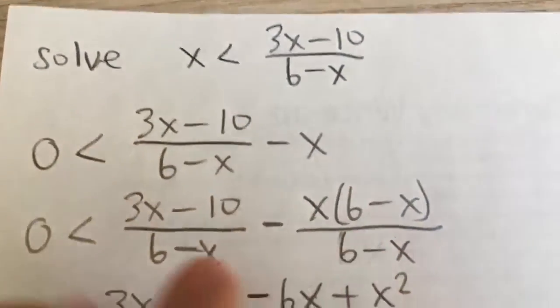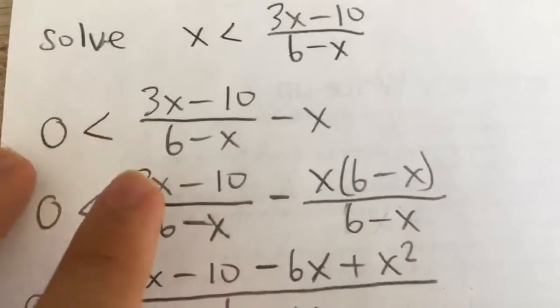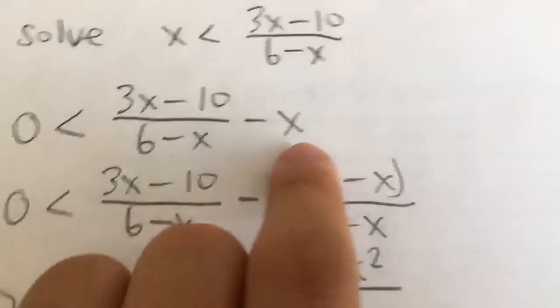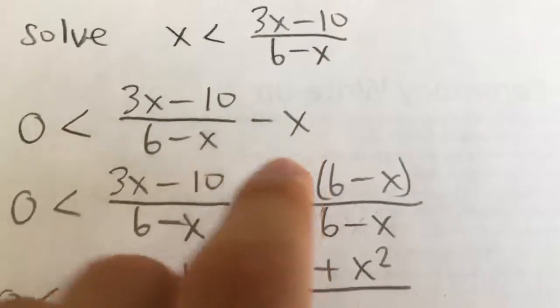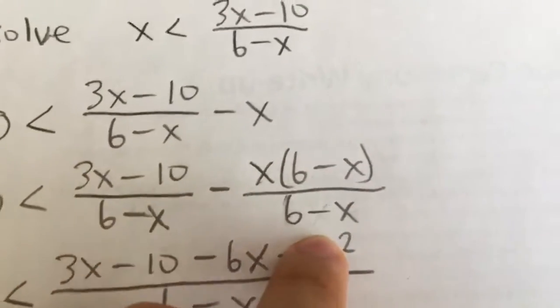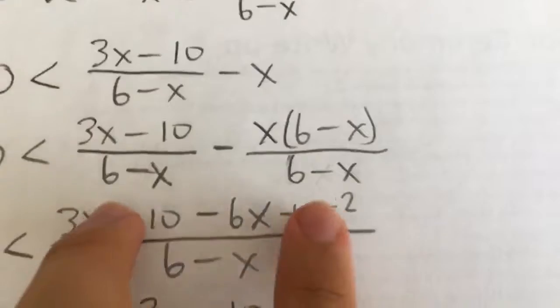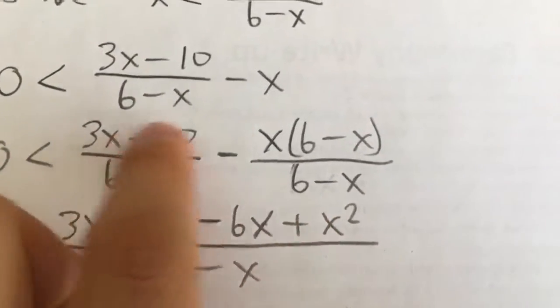And so how we're going to do this is subtract x on both sides. So this big part has to be greater than 0. And we have to combine these two terms. So we have to write x with a common denominator of 6 minus x. So I'm going to multiply the numerator and denominator of x by 6 minus x. And so now that they have the same denominator, I can just subtract the tops.